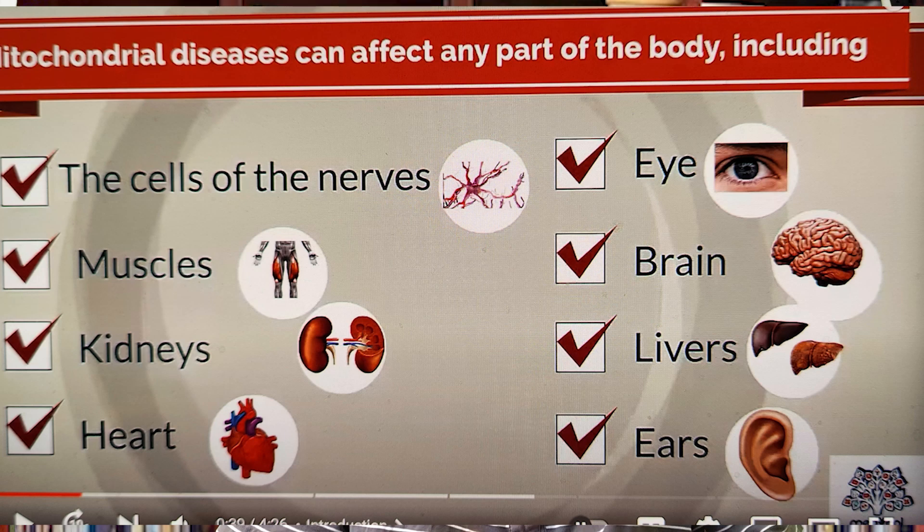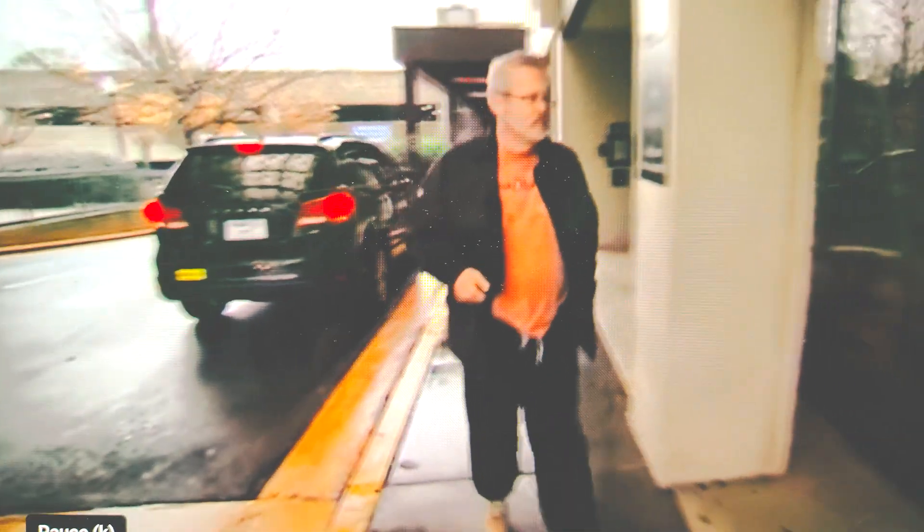This situation leads to cell injury and cell death. Morbidity and mortality are high in diabetes due to mitochondrial dysfunction. Mitochondrial diseases can affect any part of the body including the cells of the nerves, muscles, kidneys, heart, eye, brain, liver, and ears. Due to loss of energy in the organs in mitochondrial dysfunction, multiple organ cells die and lead to organ failure. About one in five thousand individuals have a genetic mitochondrial disease.